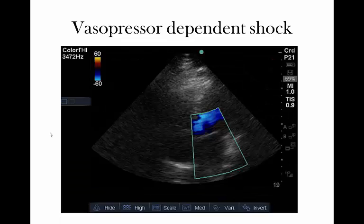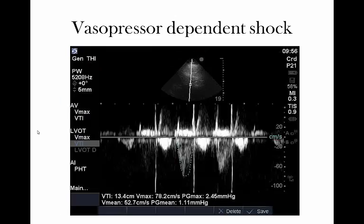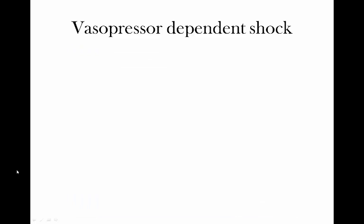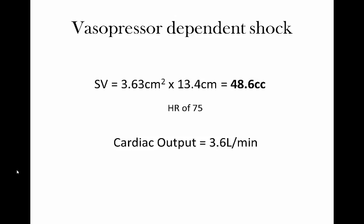We find a somewhat dubious apical 5-chamber, but to be sure we're going to get a good Doppler signal, we throw some color Doppler on. Because we have a reliable blue jet, I'm satisfied that the Doppler information is preserved, and we can pulse that area to get a decent envelope capturing the height of our cylinder — 13.4 centimeters. Running the math, our stroke volume is nearly 49 cc at a relatively low heart rate, giving a cardiac output of 3.6 liters per minute. A pretty lousy cardiac output despite preserved ventricular function.